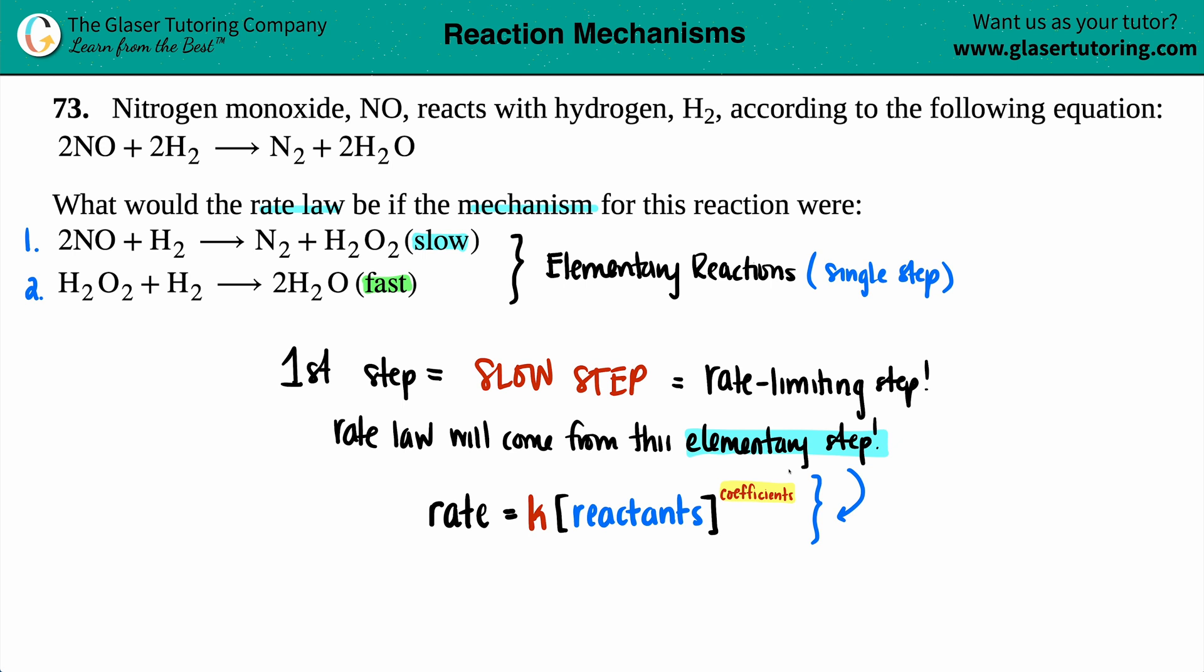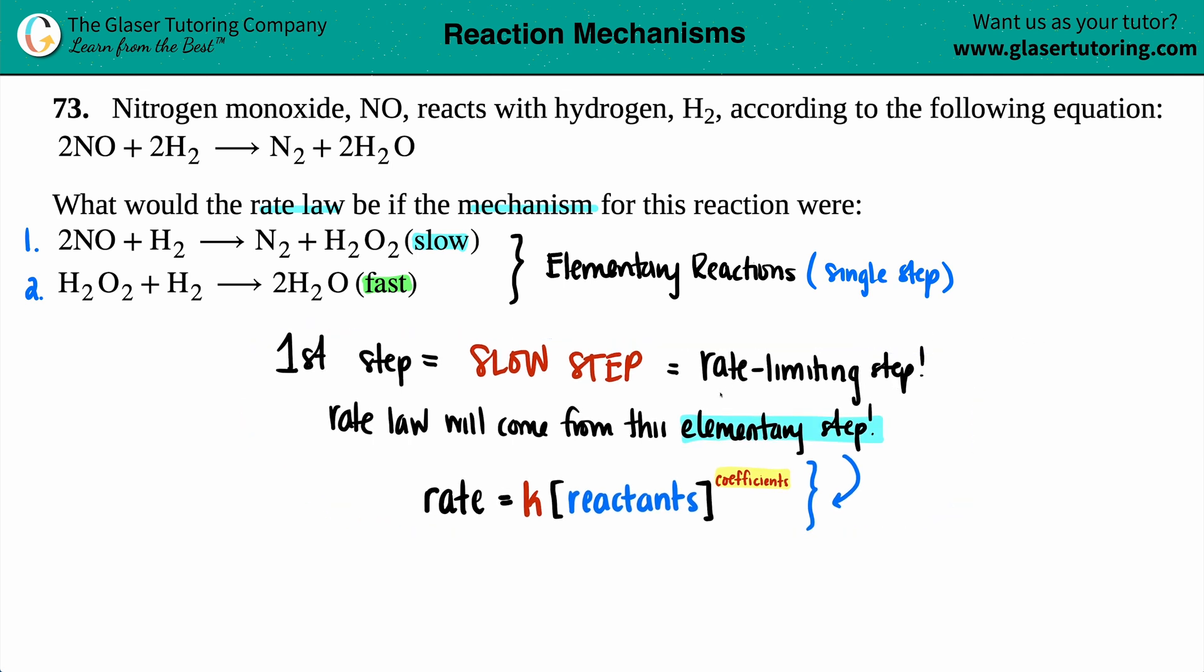But the only thing that's different is now I can raise it to my coefficients of that elementary step. Back then, we were probably only given a random overall reaction. I didn't specifically know, was that only a one-step reaction? Was that a two-step or three-step reaction? But if they're classifying it as a mechanism and each one of them are definitely elementary steps, you can raise it to its coefficients. So the elementary step that we care about is the slow one. And the slow reaction is reaction number one. 2NO plus H2 yields N2 plus H2O2.